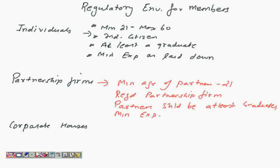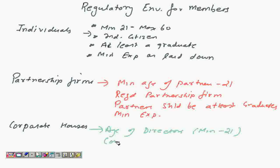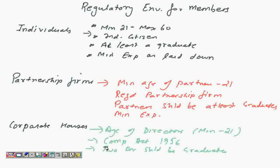For corporate houses, the age of directors has been specified — minimum again is 21. It has to be registered under the Companies Act of 1956, two directors should be graduates, and again minimum experience as laid down from time to time.